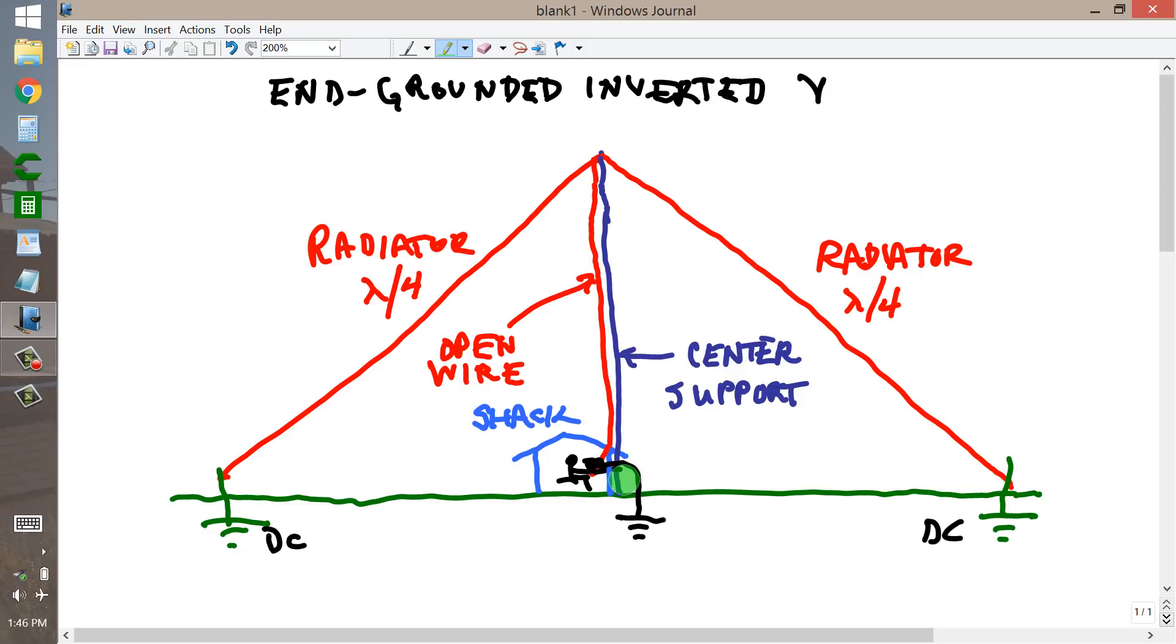With your open wire line, the high SWR should present no problem. Your center support can be a tower, a creosoted telephone pole, which I'm sure your neighbors would love. It can even be a tree, anything, but it should be as high as possible.